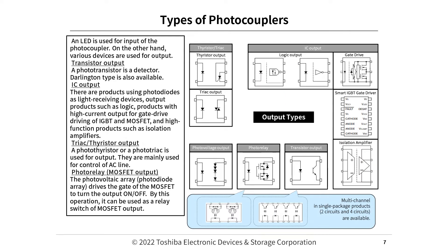Types of photocouplers. An LED is used for input of the photocoupler; various devices are used for output. Transistor output: a phototransistor is the detector; Darlington type is also available. IC output: products using photodiodes as light receiving devices, logic output products, products with high current output for gate drive of IGBTs and MOSFETs, and high-function products such as isolation amplifiers. TRIAC and thyristor output: a photothyristor or a phototriac is used, mainly for control of AC lines. Photorelay / MOSFET output: the photovoltaic array (photodiode array) drives the gate of a MOSFET to turn the output on and off, acting as a relay switch.